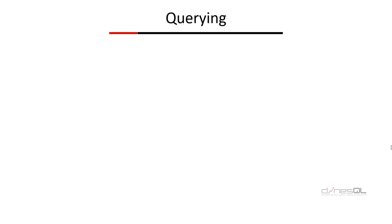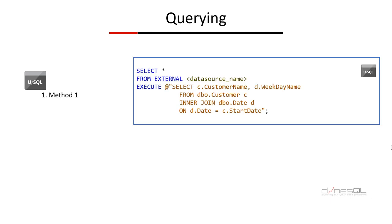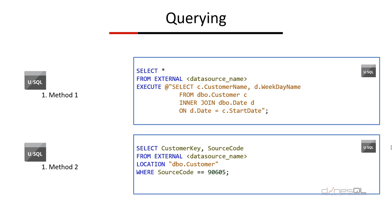Once the data source is created, you can start using it. There's no concept of creating external tables — you simply refer to tables using the external data source. There are two ways of accessing data. The first method: SELECT column list FROM EXTERNAL [data source name] EXECUTE [statement] — this allows getting data from multiple tables. The second method: SELECT column list FROM EXTERNAL [data source name] with a LOCATION keyword referring the table name, which can be extended with WHERE clauses like source_code = 90605.